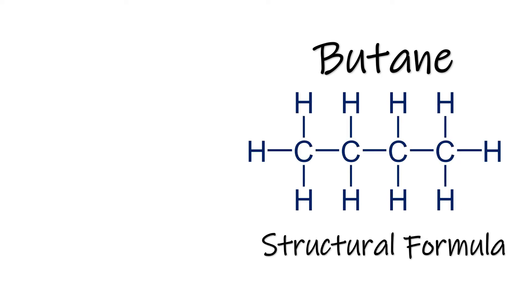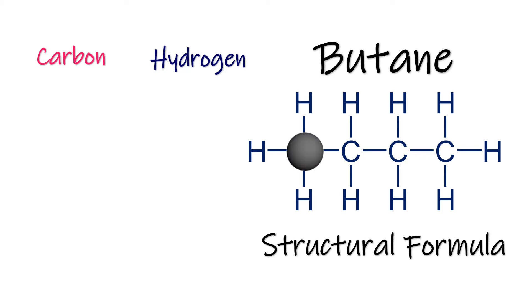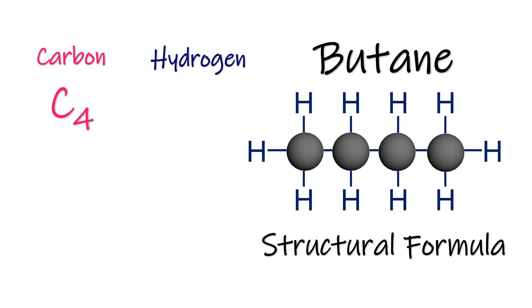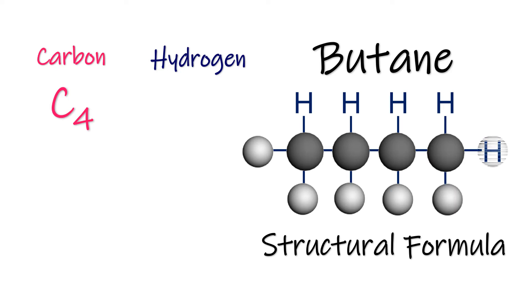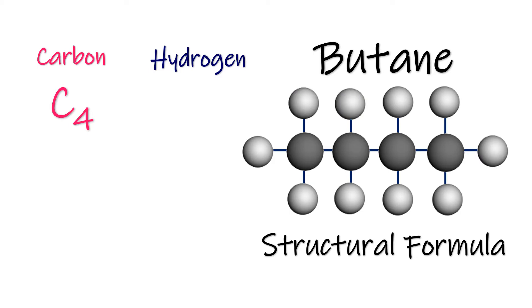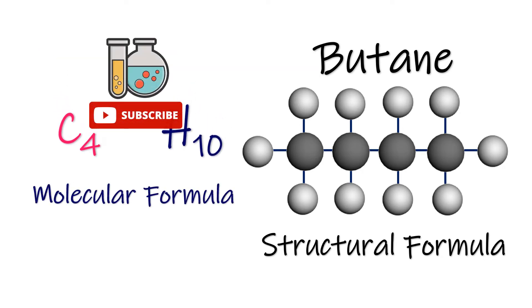Let's deduce the molecular and empirical formulas of butane from its structural formula. The structural formula of butane shows that the compound is made from two elements, carbon and hydrogen. Counting the carbon atoms gives us 1, 2, 3, and 4 — a total of four carbon atoms. Counting the hydrogens gives 1 through 10 — the total number of hydrogen atoms is 10. Therefore, the molecular formula of butane is C4H10.